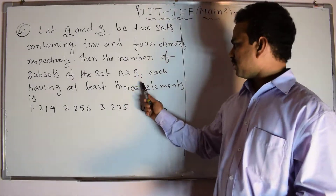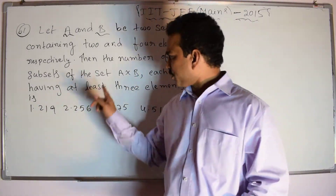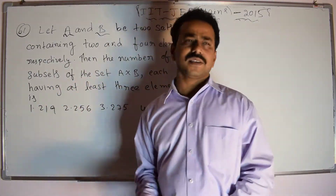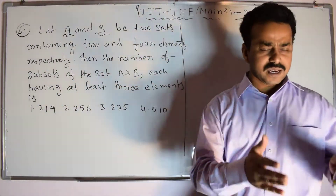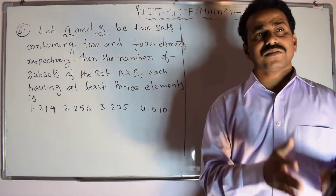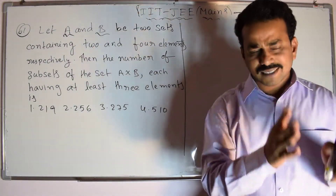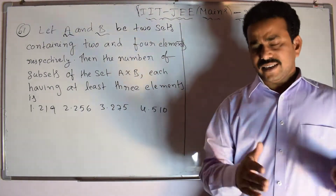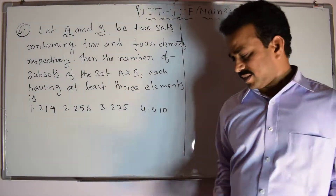First we will calculate the total number of subsets of A cross B. Among them, we will calculate the total number of subsets which contain exactly at least three elements.